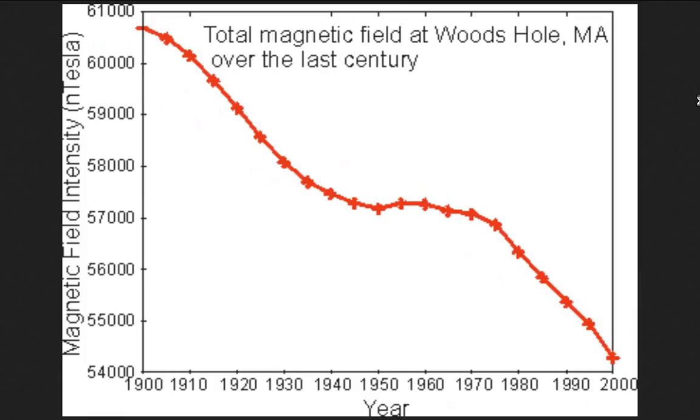What about this one? This is a little bit more scintillating. 61,000 down to 54,000. From 1900 to 2000. So that's 100 years of variation with a stable period, we'll call it, at 57,000.